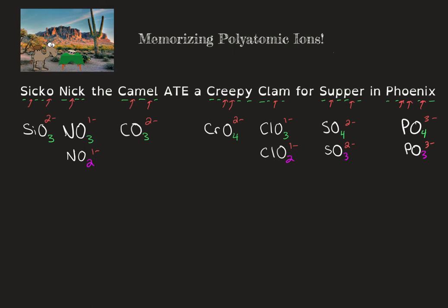Within chlorate, I can derive two more polyatomic ions. If I have ClO, 1−, that is below chlorate, and this is called hypochlorite. If I go above chlorate and add one oxygen, which would be ClO₄, with a 1− charge, that's above chlorate and we call that perchlorate.